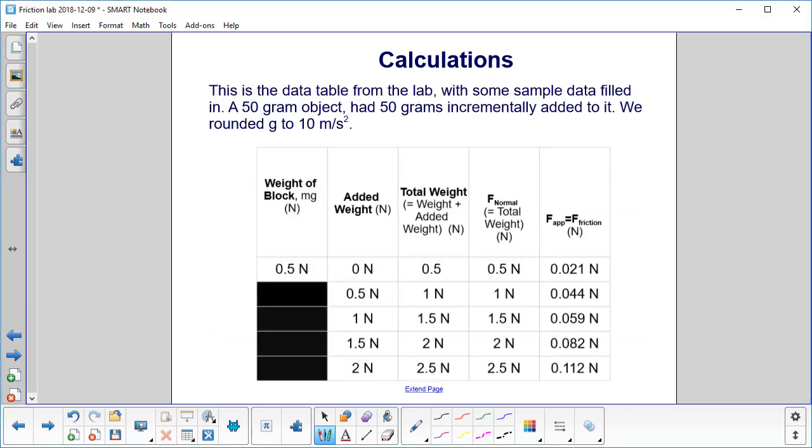This is the data table that you should be using. We have the weight of the block, you measure with the spring scale. Then our added weights go here. Then total weight, which is just the weight of the block plus the added weight. Then we have the normal. Now of course this just equals mg, so we just copy over the column. And this over here, this is the measurement on the spring scale as we were pulling the block over the surface at a constant velocity.